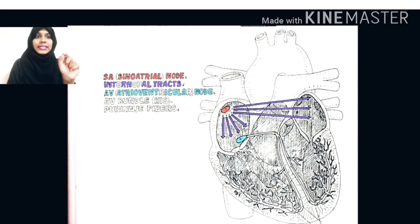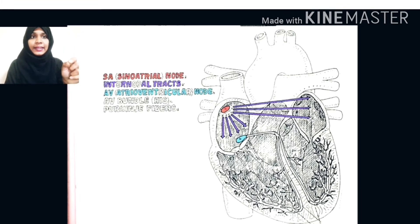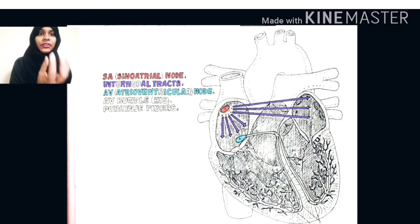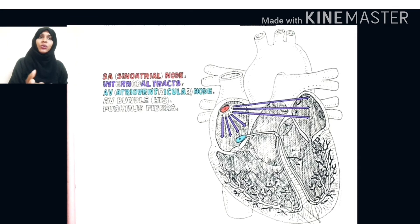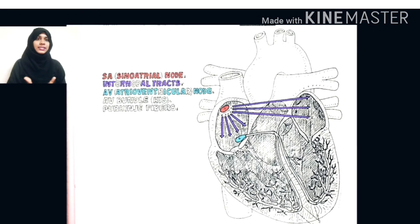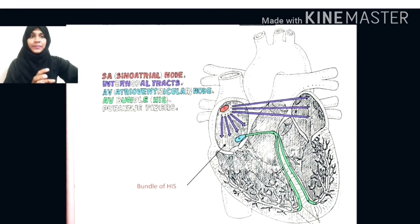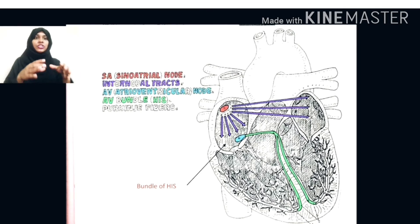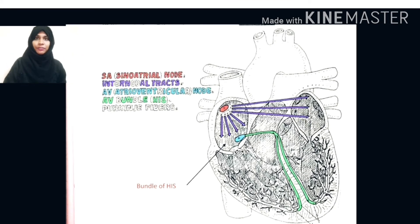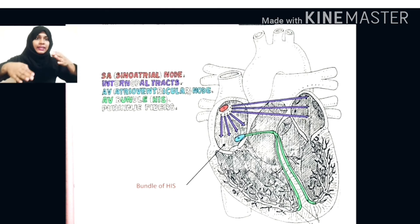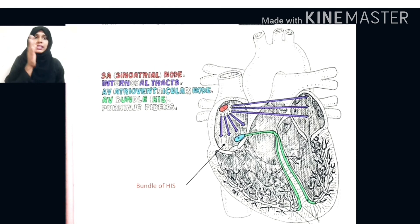This electrical discharge then reaches the atrioventricular node, situated in the lower portion of the right atrium, about one centimeter above the coronary sinus. When the electrical discharge reaches the AV node, it is conducted onward. The AV node has a firing rate of 40 to 60 beats per minute, which activates in some heart diseases if the SA node is not functioning. From the AV node, the impulse is discharged to both ventricles via the bundle of His, which passes through the septum and divides into the right bundle branch and left bundle branch.